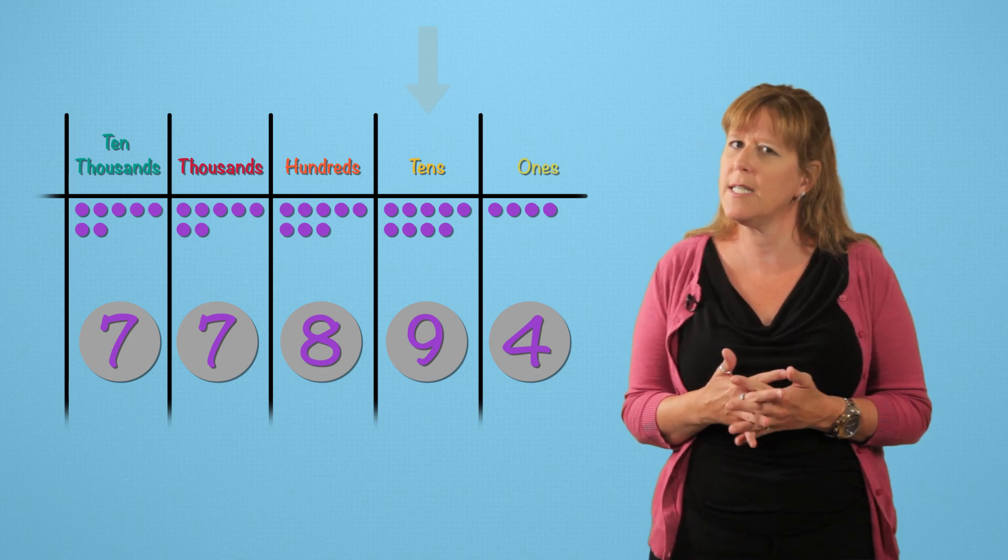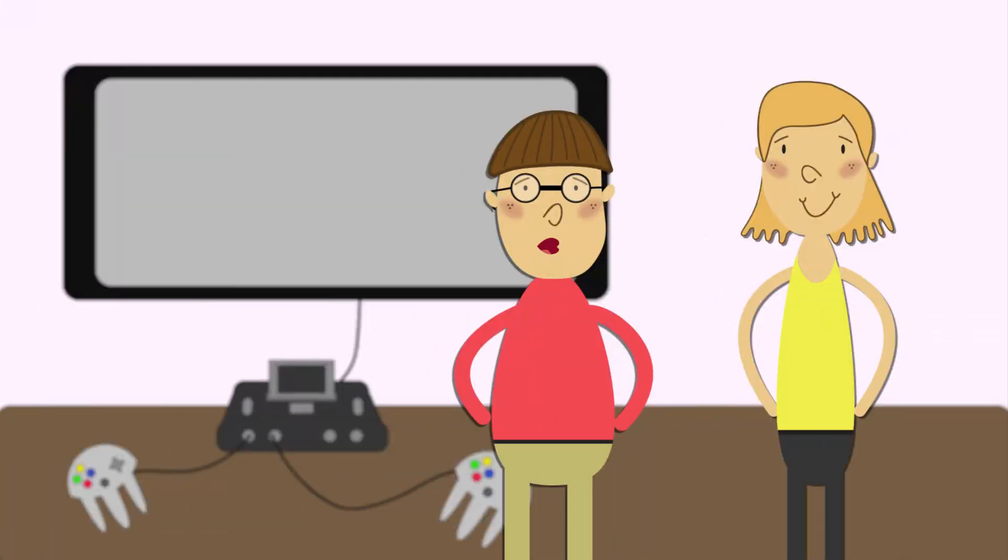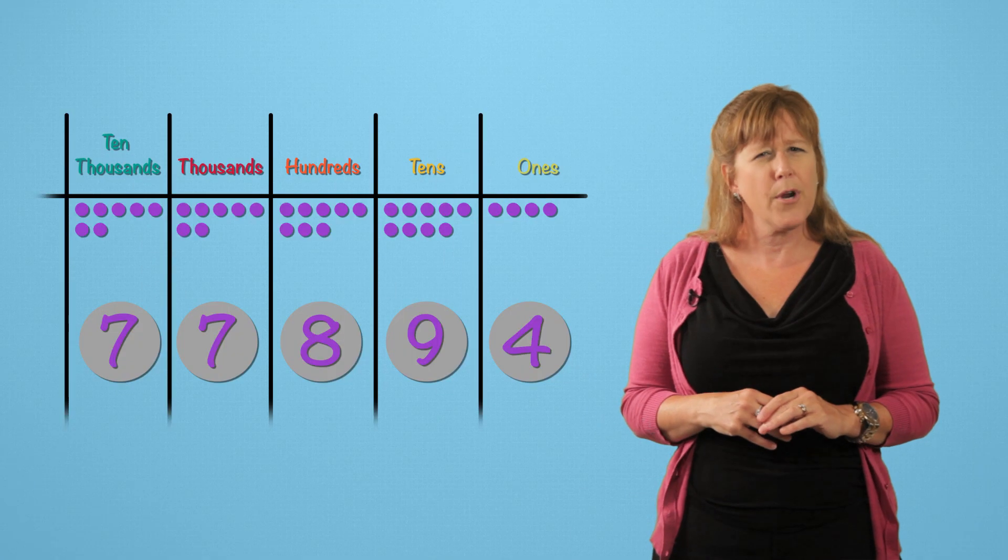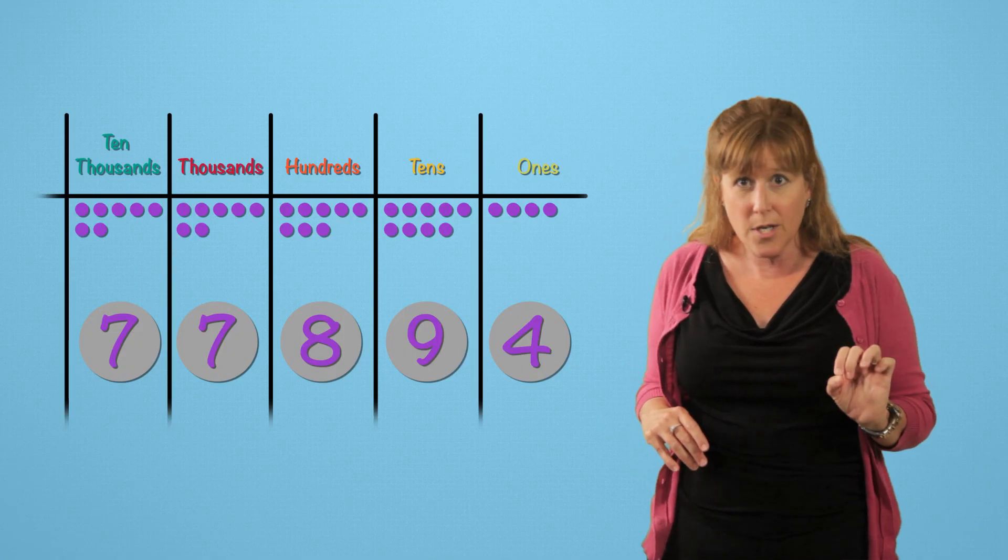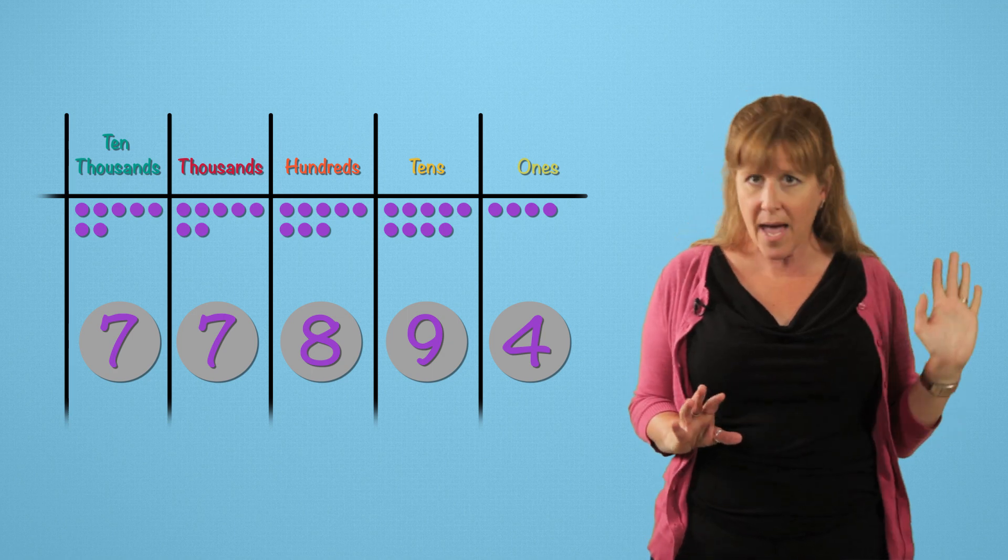Imagine we rounded to the tens place. I scored 77,890 points. Still pretty long. But remember, when we rounded the points the first time, like all the way back a minute ago.